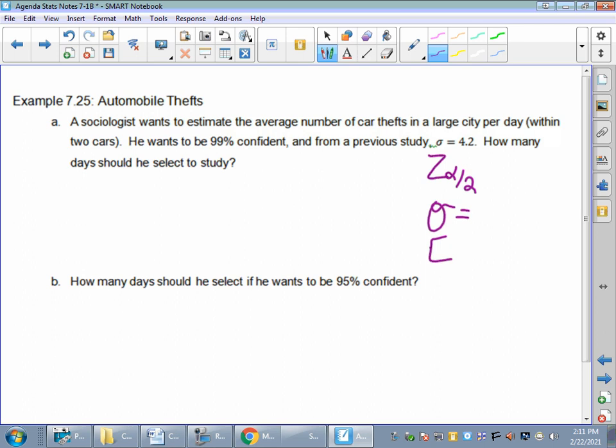So my Z, my sigma, and my margin of error. Well, my Z, it's 99% confident, right? Didn't we just do this one? My alpha was one. So alpha over two is 0.05. I'm pretty sure that came out to a 2.58. My sigma, it tells me is 4.2. My margin of error, I see the word within here, within two cars. So my margin of error is going to be two. So I can go ahead and I can calculate that all out.